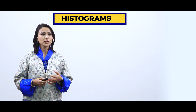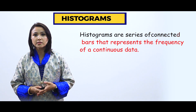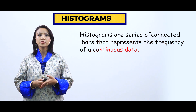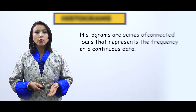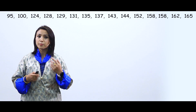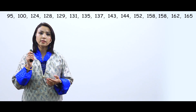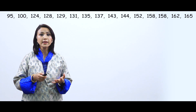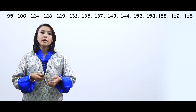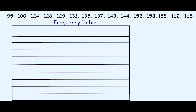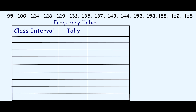Let us now move on to histograms. Histograms are a series of connected bars that represent the frequency of a continuous data. To construct a histogram, we first need to construct a frequency table. Let us take the same set of data used for the stem and leaf plot. The frequency table has three columns: the first column represents the class interval, the second represents the tally, and the third represents the frequency.